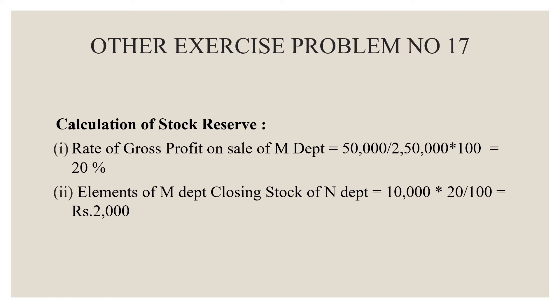To calculate the stock reserve: take the gross profit of M department divided by the credit side total (excluding closing stock), multiplied by 100. This gives 20%. Since N department has closing stock from M department, we apply this 20% to N department's closing stock: 10,000 × 20 ÷ 100 = ₹2,000 stock reserve. If closing stock percentage is given, a few additional steps are needed compared to Problem 18.